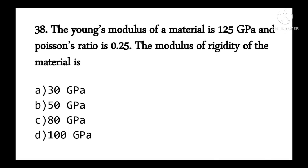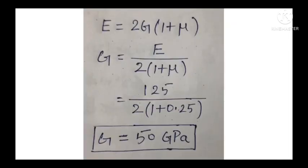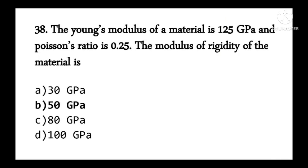Young's modulus E = 125 GPa and Poisson's ratio μ = 0.25; find the modulus of rigidity G. Using E = 2G(1 + μ), rearranging gives G = E / [2(1 + μ)]. Substituting values gives G = 50 GPa. Option B is correct.